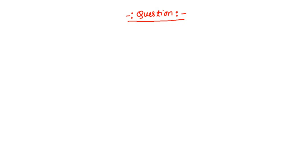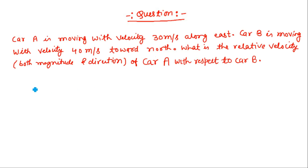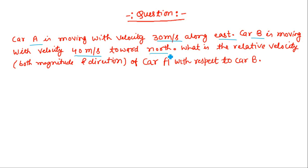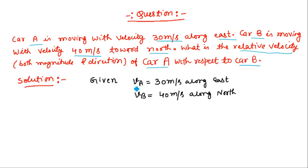Let us solve this problem. Car A is moving with velocity 30 meter per second along the east and car B is moving with velocity 40 meter per second toward the north direction. We want to find the relative velocity of car A with respect to car B.